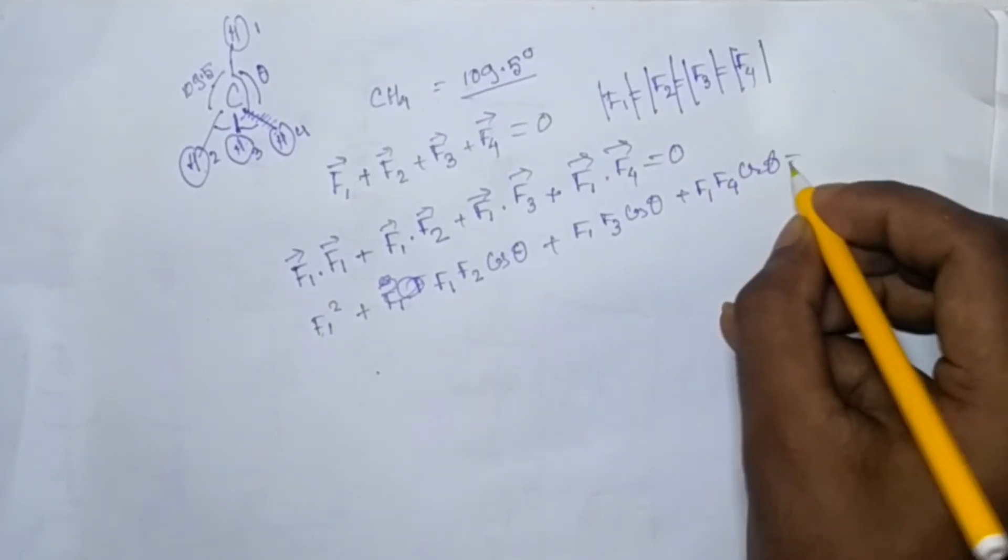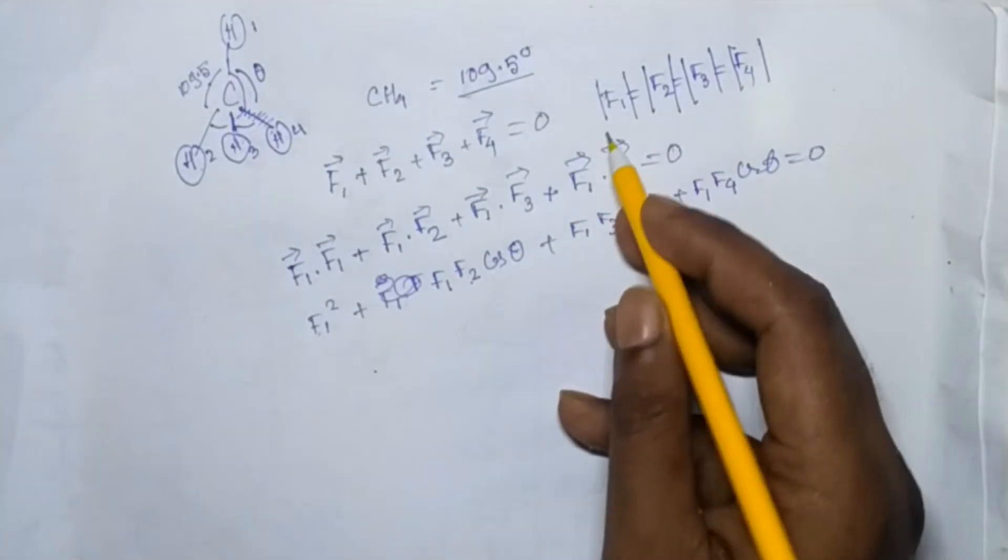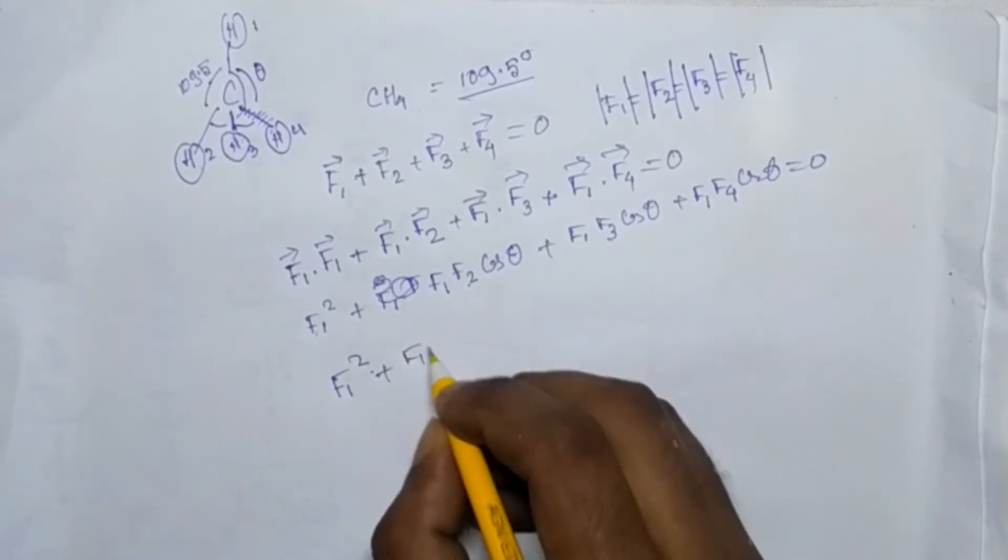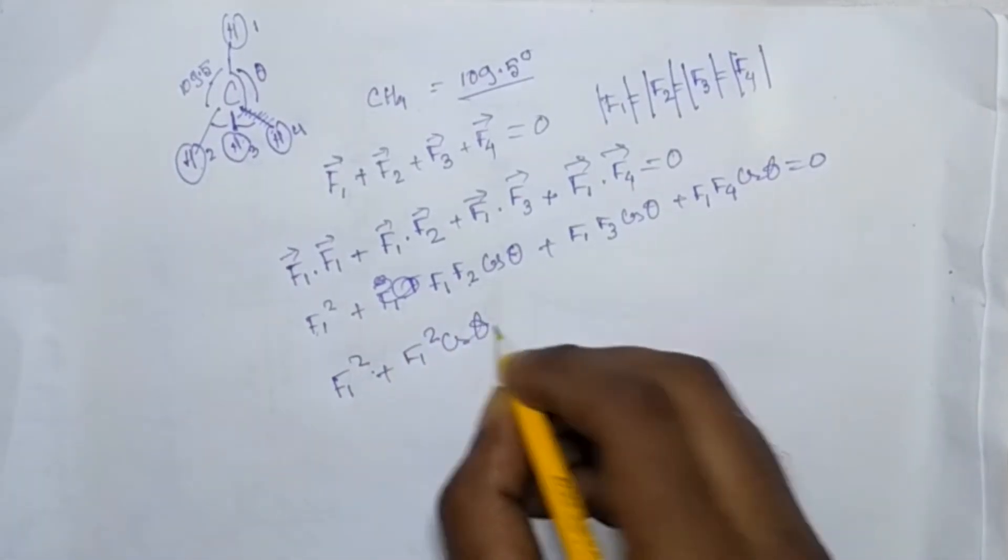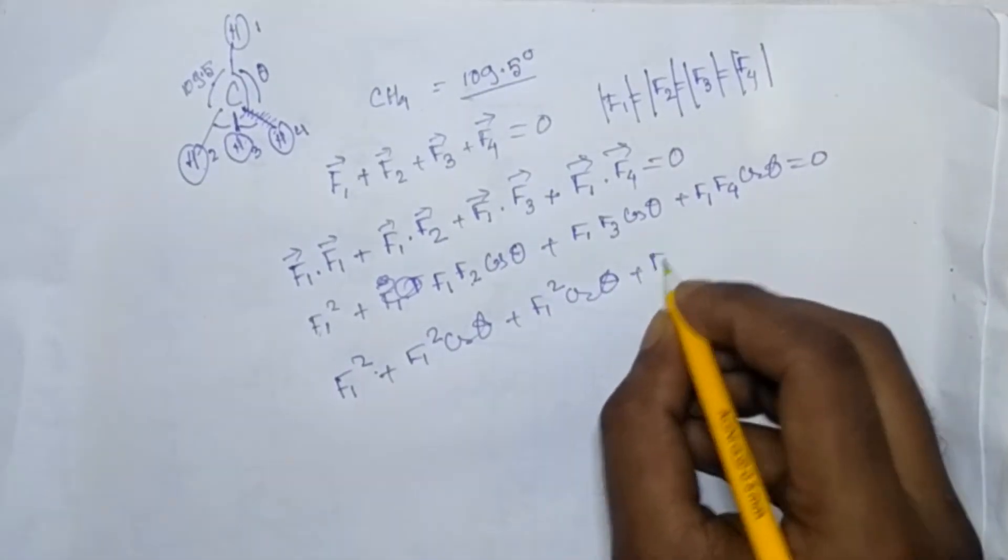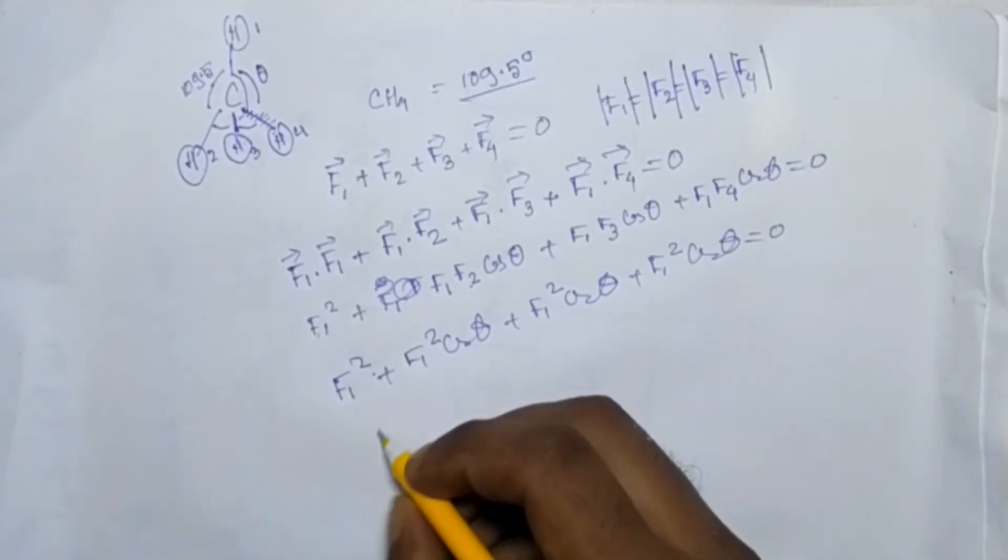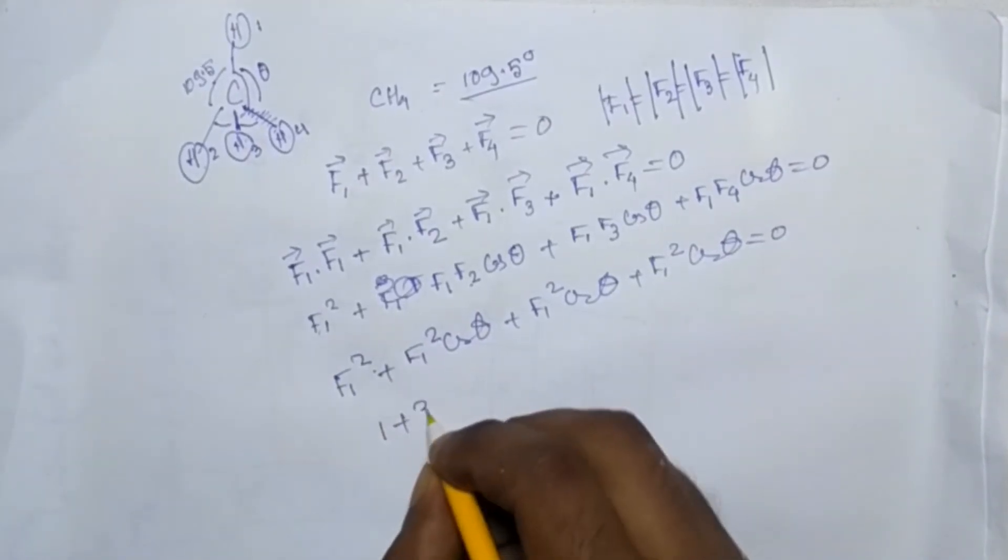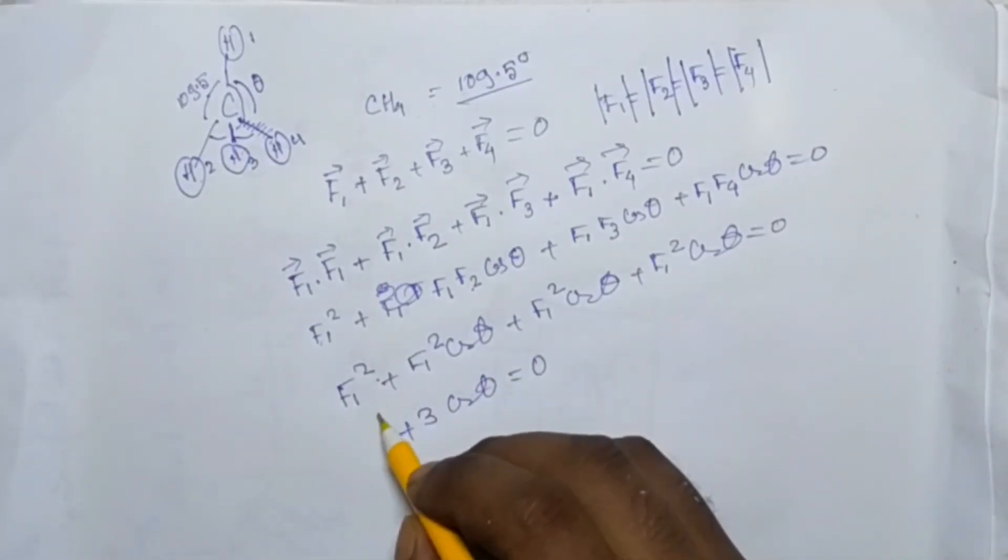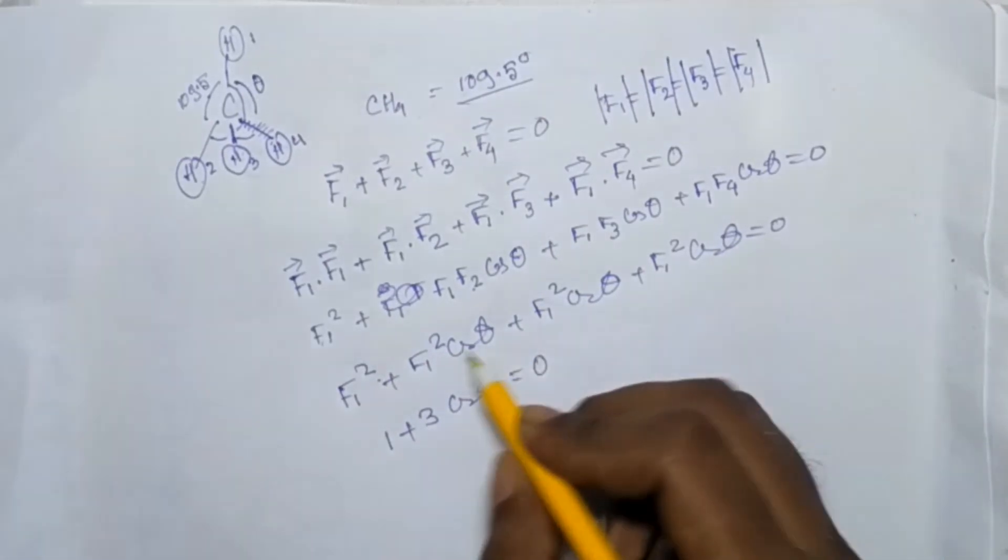So you can write F1 squared plus F1 cos theta, this whole term, equal to 0. I am just cancelling out this F1 and adding this cos theta terms.